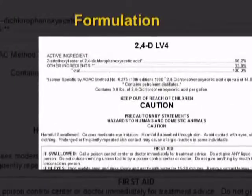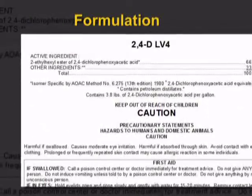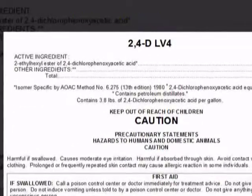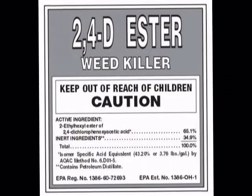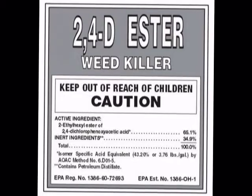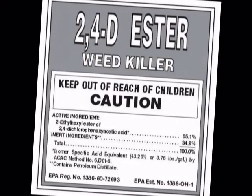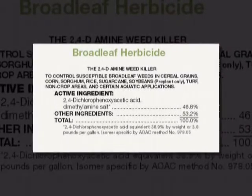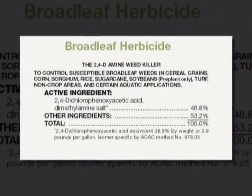The formulation of a pesticide determines how that pesticide should be applied and the possibility of injuring non-targets. For example, the herbicide 2,4-D can be purchased as an ester or an amine. The ester formulation can vaporize to a gas after application and be carried by the wind, while the amine formulation is less likely to vaporize.